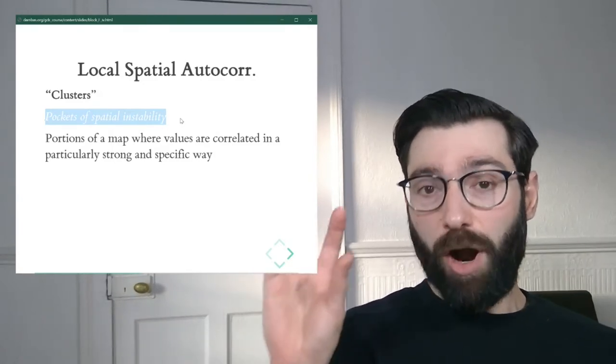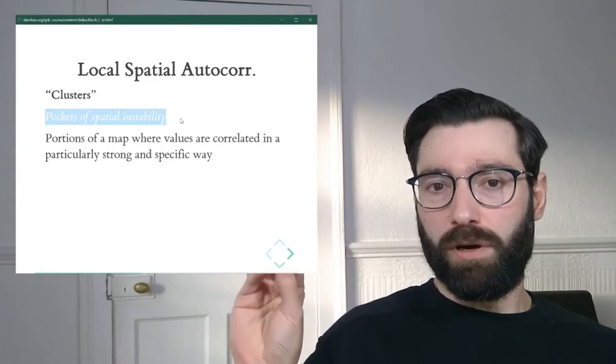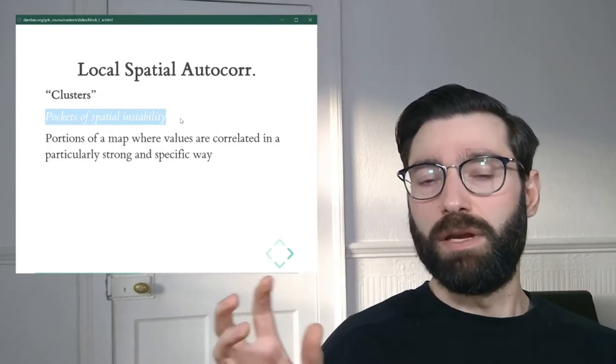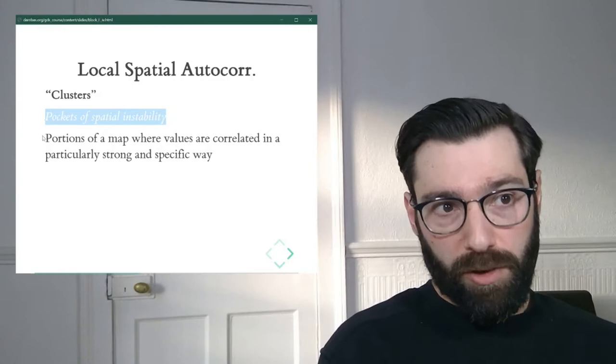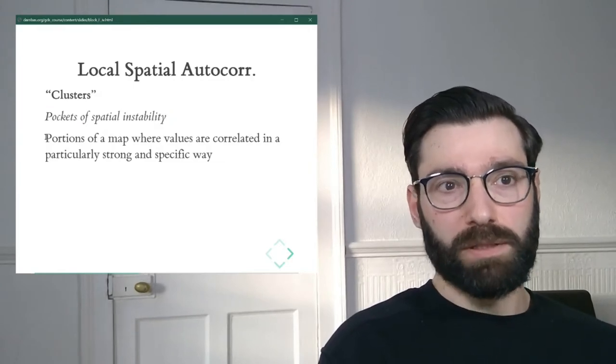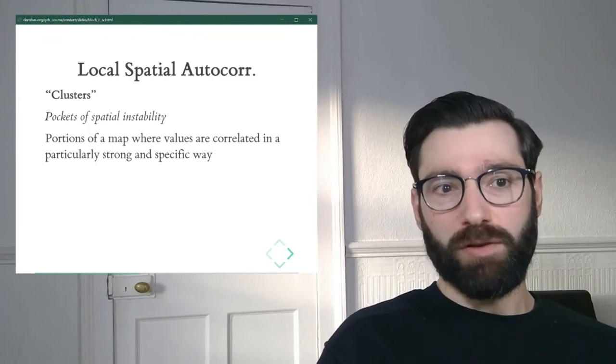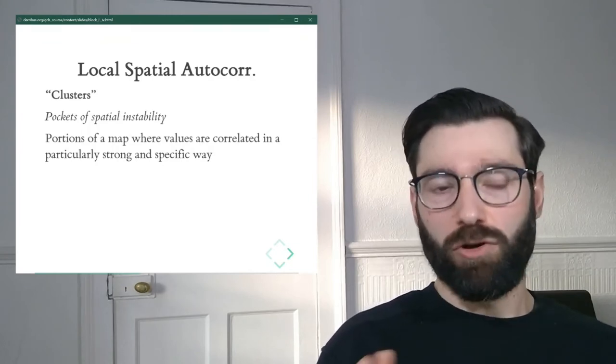These are parts of a map in which there is a very marked pattern where the association between values and location is particularly clear. In other words, local spatial autocorrelation is about finding portions of a map where values are correlated in a particularly strong and specific way.